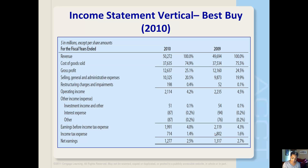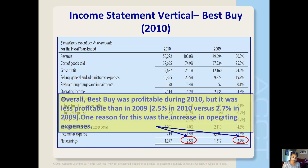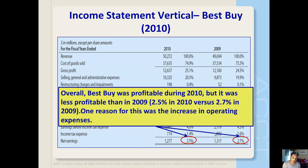Changes in the income statement can be analyzed in a similar fashion using vertical analysis. All accounts are compared to total revenues. When comparing net earnings from Best Buy's income statement year over year using vertical analysis, we can see they were still profitable in 2010, but not as much. Net earnings as a percentage of revenues went down from 2.7% to 2.5%.